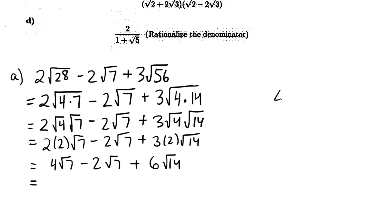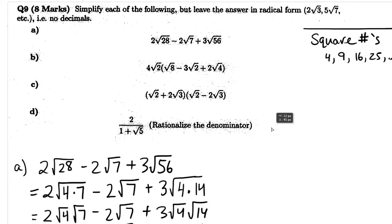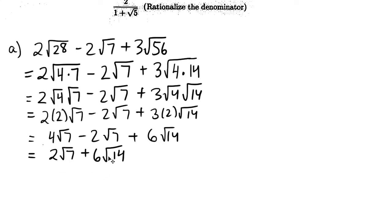So this is really 4 root 7 minus 2 root 7 plus 6 root 14. Now, just like 4x minus 2x is 2x, 4 root 7 minus 2 root 7 is 2 root 7. Those two terms go together. And 6 root 14 cannot be simplified anymore. So we obtain this expression: 2 root 7 plus 6 root 14. Let's see what the next one's about.